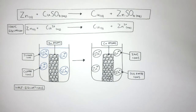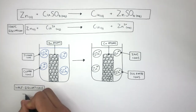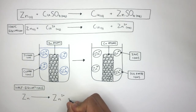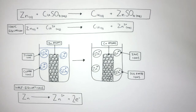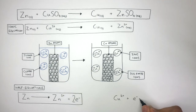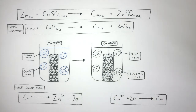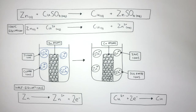Now we can use half equations to show how the zinc and copper have been oxidized and reduced. The half equation for zinc is: Zn → Zn²⁺ + 2e⁻, because the zinc has lost two electrons for the zinc atom to form a zinc cation with a charge of 2+. The half equation clearly shows how zinc has lost electrons, so we know zinc has been oxidized, as oxidation is the loss of electrons.